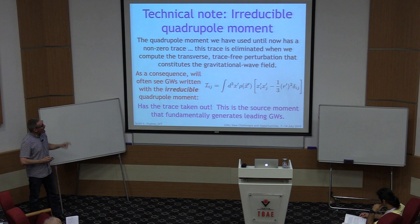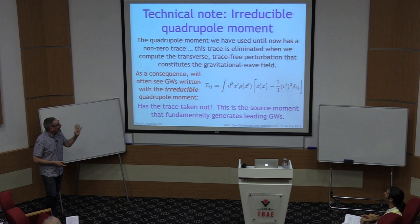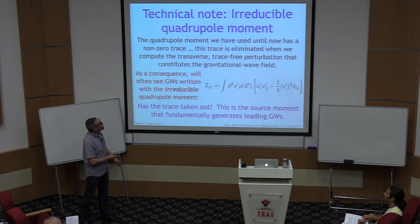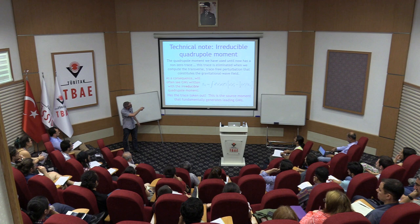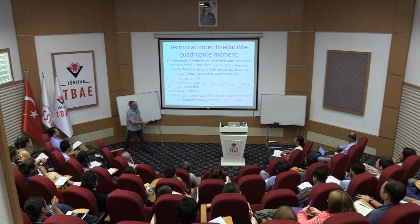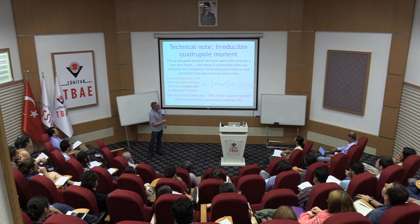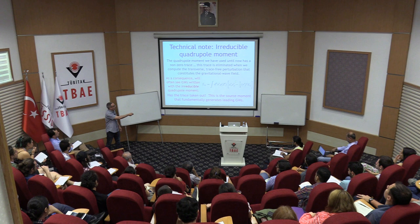Sometimes when doing these calculations it's useful to remove the trace from the beginning. Often in general relativity textbooks, the quadrupole moment used has a form with a term minus one-third times the delta subtracted — the trace has been removed in step one. This commutes with the projection tensors. You'll often see things written in terms of this so-called irreducible quadrupole moment. It's a choice whether you remove the trace in step one or a little later in the calculation.